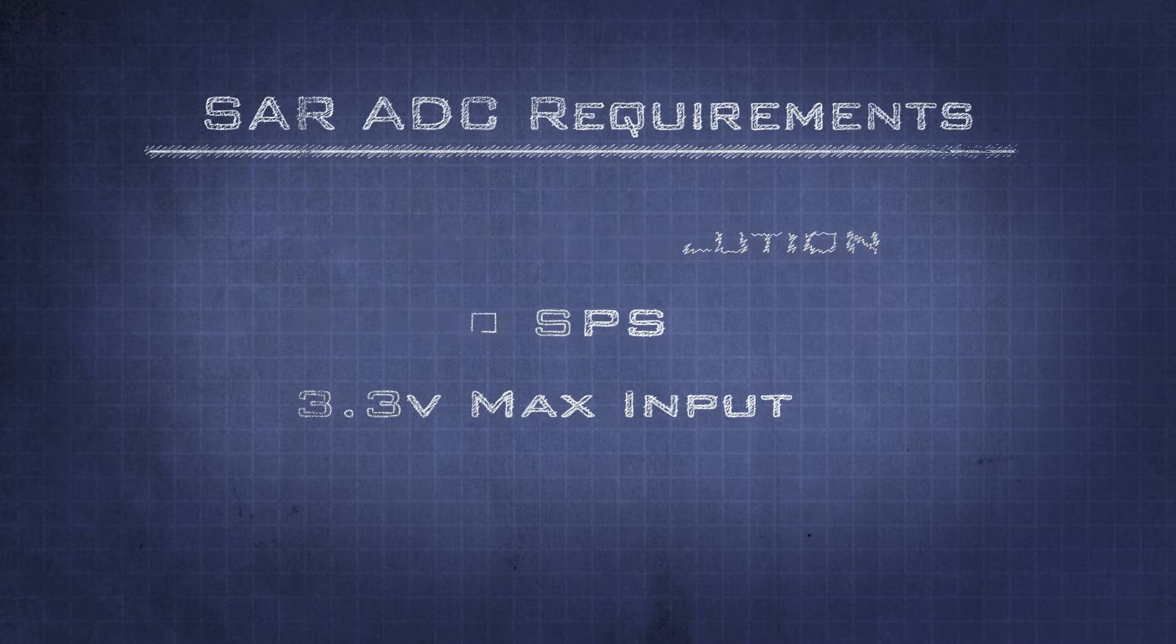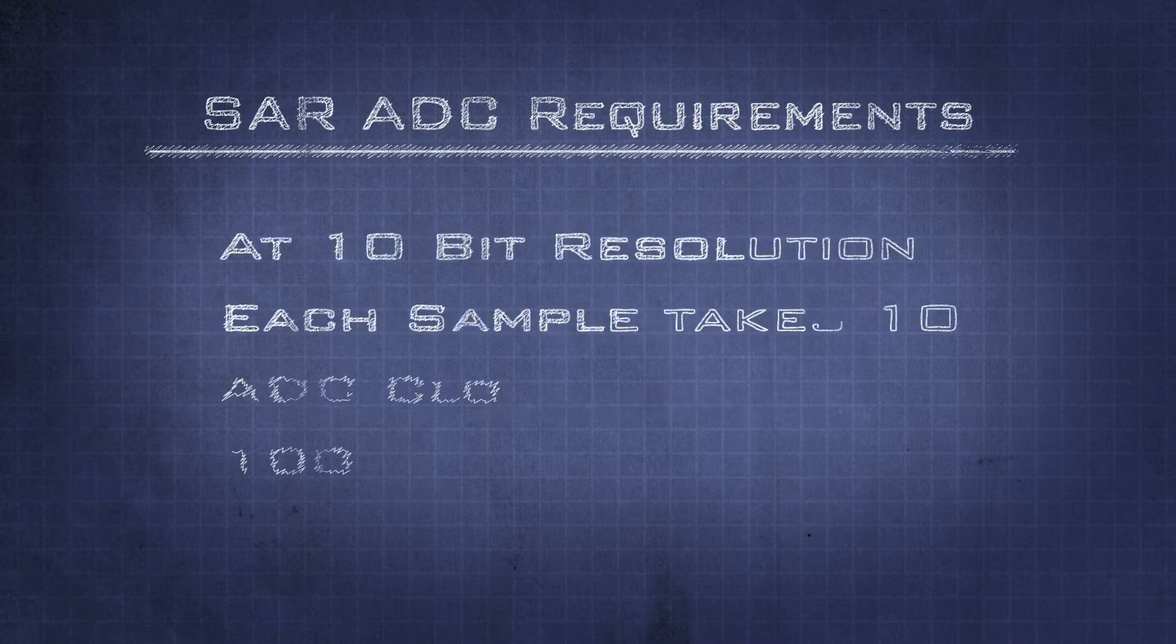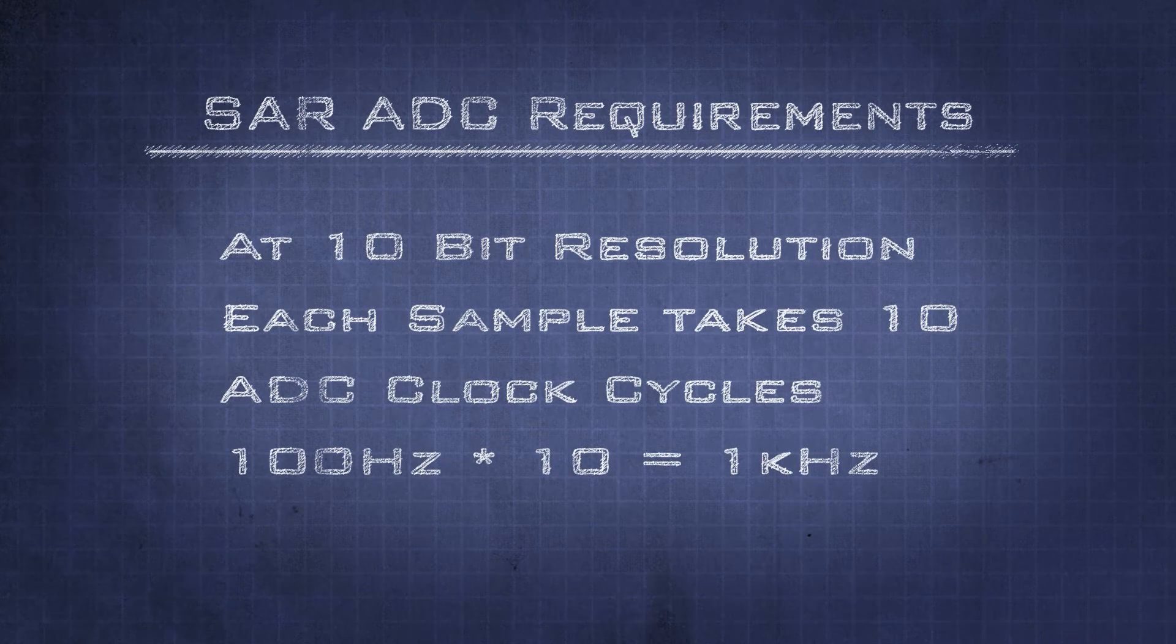Since we know our sample rate and bit size, we can calculate the minimum clock speed we need to hit our requirements. For every sample we need 10 clock cycles to complete the binary search and step through every bit before we quantize the value.